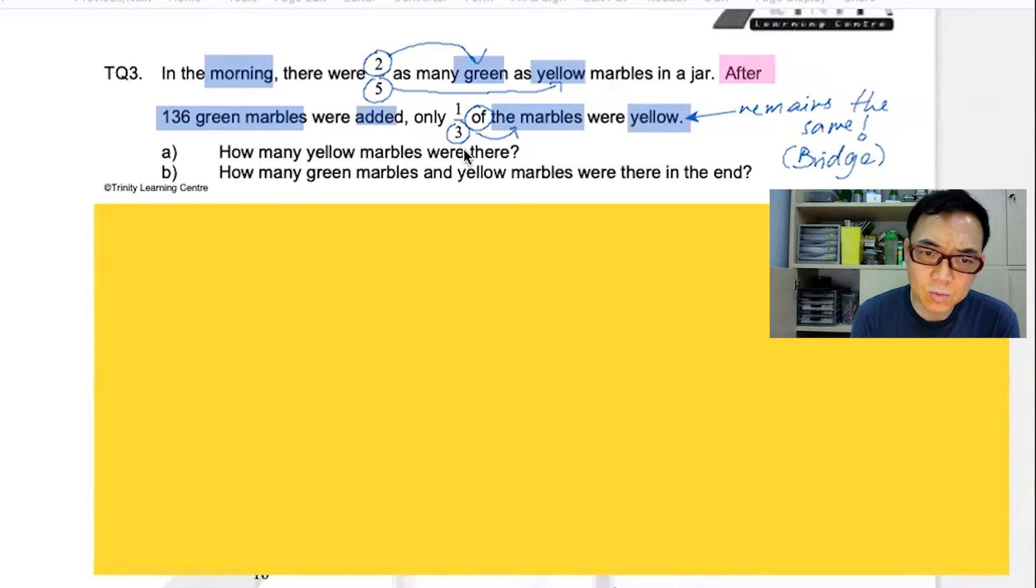The first question is asking you, how many yellow? The second question is asking, how many green and yellow in the end? Now, since we know that yellow did not change.